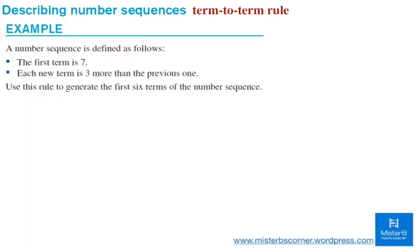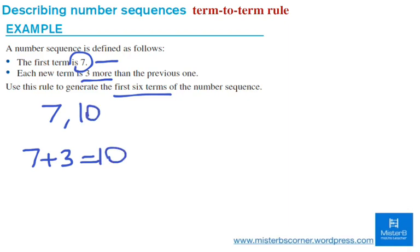Let's look at this example. A number sequence is defined as follows. The first term is 7, and each new term is 3 more than the previous one. Use this rule to generate the first six terms of the number sequence, including the first term, which is already given. So, I start with 7, and then each new term is 3 more. Then it's 7 plus 3, which is 10. So I can write my second term to be 10. 10 plus 3 is 13, and so on.